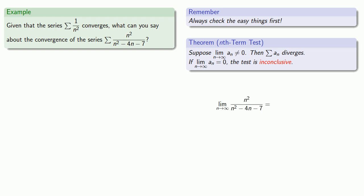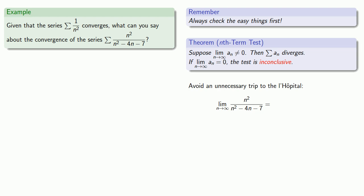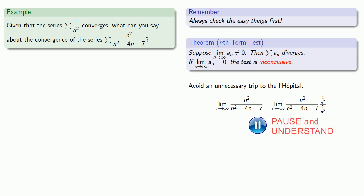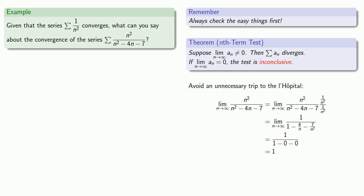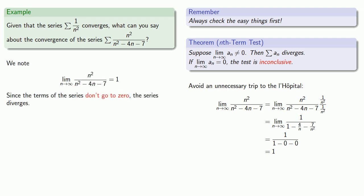We want to find the limit as n goes to infinity of the terms of our series. While this term has the form infinity over infinity and we could use L'Hôpital's rule, we should avoid any unnecessary trips to L'Hôpital. We can multiply numerator and denominator by the highest power of n in the denominator, do a little algebra, and take the limit as n goes to infinity. That limit is 1. By the nth term test, since the terms of the series don't go to 0, we know the series diverges.